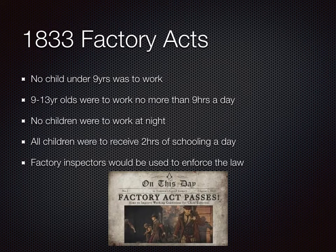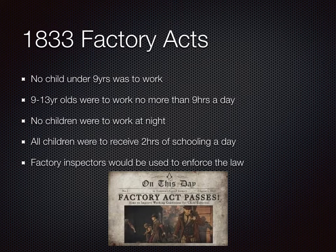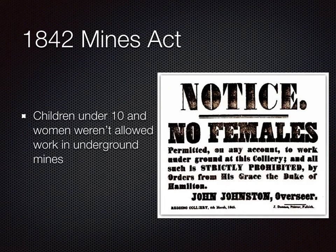However, in 1833 some reform was brought in through Parliament. They passed the Factory Acts, which stated that children under the age of nine couldn't work in factories, nine to thirteen-year-olds were to work no more than nine hours a day, no children were to work at night, all children were to receive two hours of schooling a day, and factory inspectors would be used to enforce these laws. Then in 1842, the Mines Act came, and this stated that children under 10 and women weren't allowed to work in underground mines.